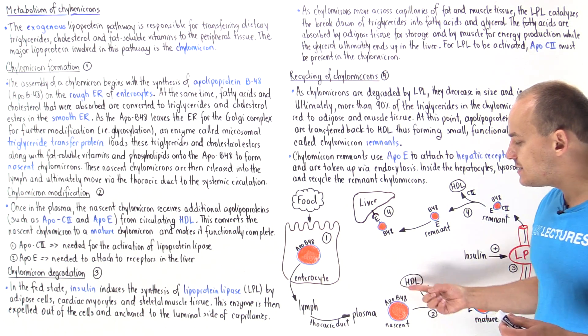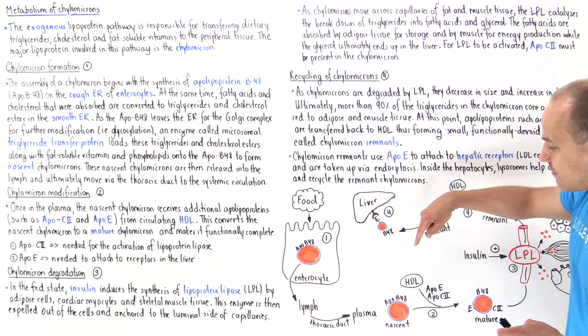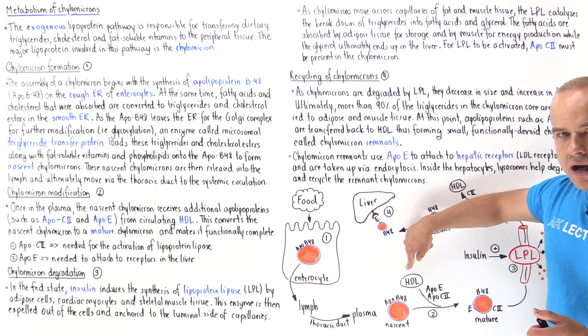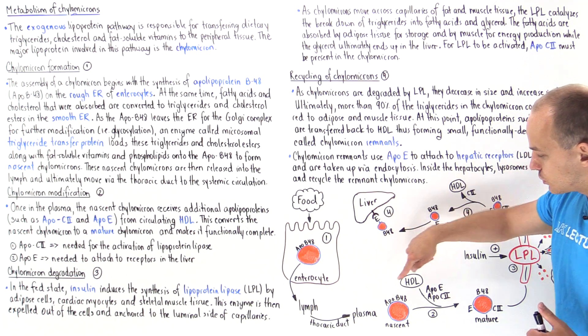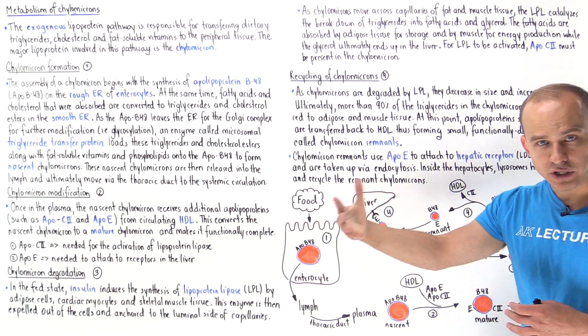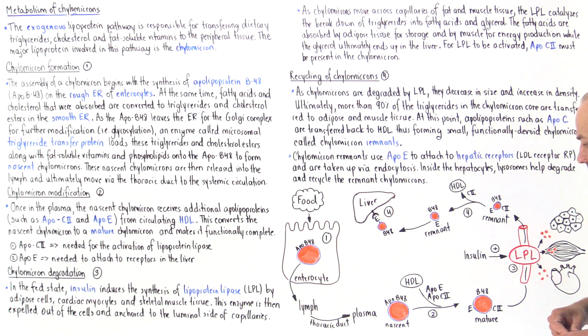Once these nascent immature chylomicrons end up in the plasma, we have these circulating HDL molecules which momentarily associate with these structures, and the HDL essentially transfer other important apolipoproteins such as apolipoprotein E and apolipoprotein C2.